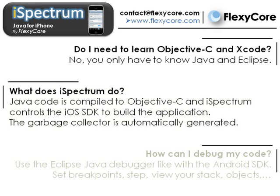What does iSpectrum do? Briefly, iSpectrum compiles Java code to Objective-C. Then it pilots the iOS SDK to build a true native iOS app. Note that a garbage collector is automatically generated and, like with Java, you don't have to worry about memory management.